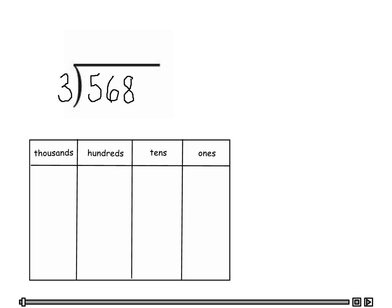Today we're going to solve three-digit dividends using numbered disks. As you can see, I have it set up. I'm going to use a place value chart in doing this. The first thing I like to point out when teaching students is to look at the divisor. The divisor will determine how many disks we will have per group, so that's very important. Let's go ahead and start doing this problem.